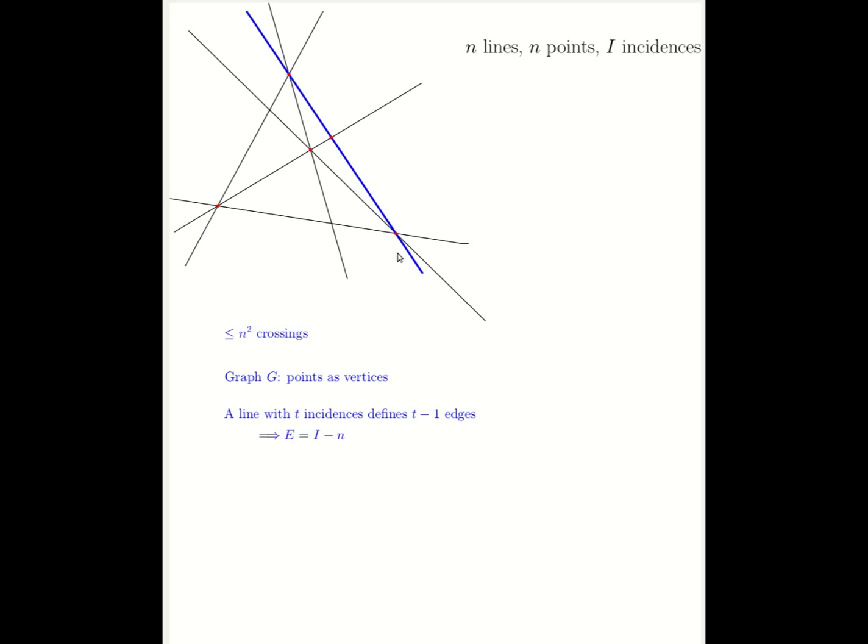If we sum up all these incidences over all the lines, we get to i. And since each line defines one less edge than its number of incidences, the number of edges in this graph will be i minus n.